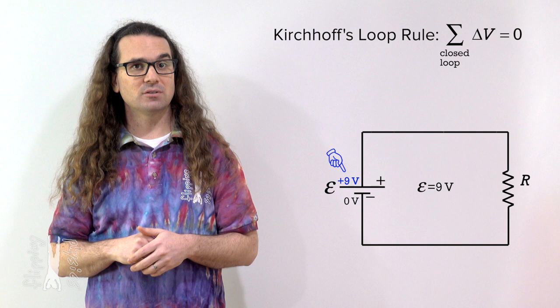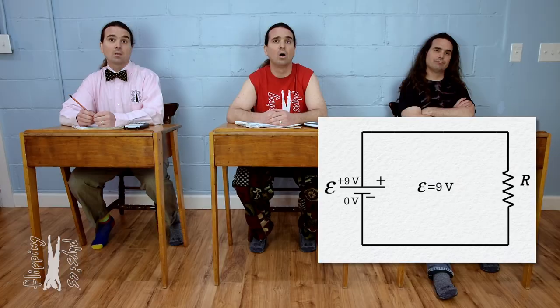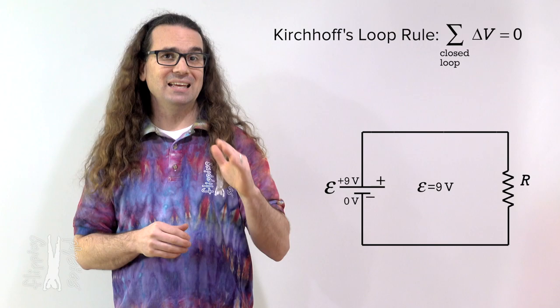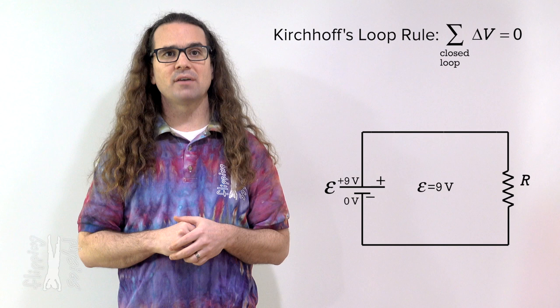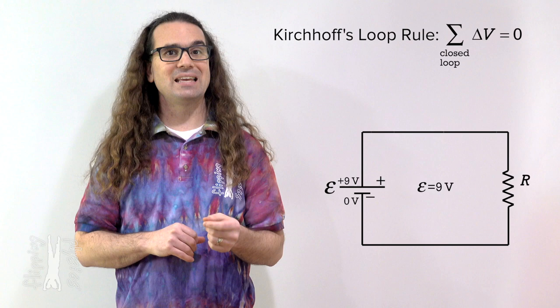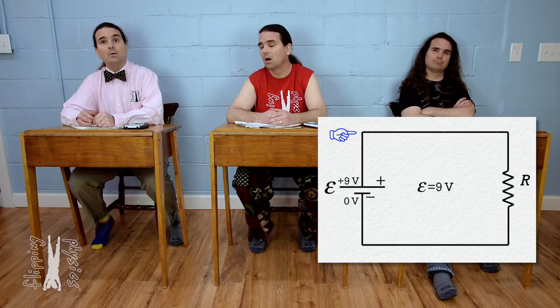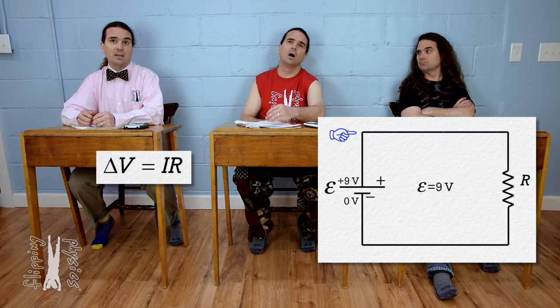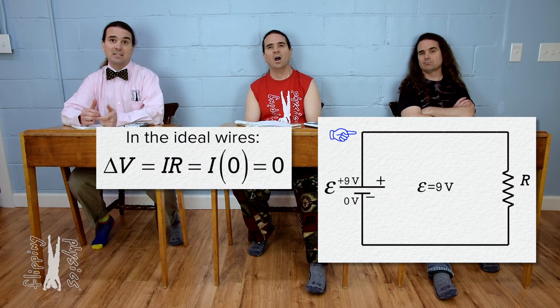Considering these are ideal wires, what is their resistance? Ideal wires have zero resistance. Correct. And considering the positive terminal of the battery is at positive 9 volts, what then is the electric potential in the upper left hand corner of the circuit? Because electric potential difference equals current times resistance and the wire has zero resistance, the change in electric potential is zero, so the electric potential should be 9 volts.